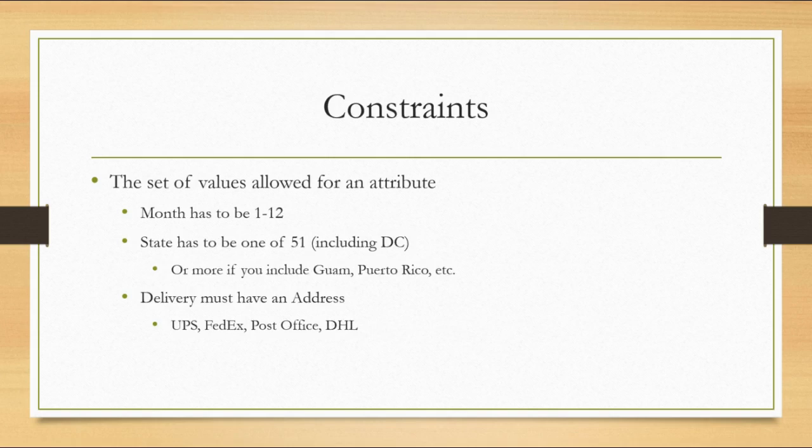Constraints are the set of values allowed for an attribute. For example, a month has a set of 12 months — the months would either be 1 through 12 or the names January, February, March, etc. The constraint for a state could be 1 of 51 if you include D.C., or more if you include the territories of Guam and Puerto Rico and others. Another example would be a delivery — a delivery must have an address; if it doesn't have an address, UPS, FedEx, Post Office, DHL cannot deliver it. So a constraint for a delivery might be a valid address.